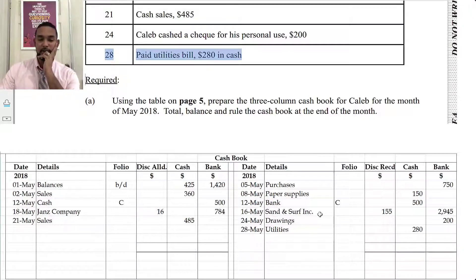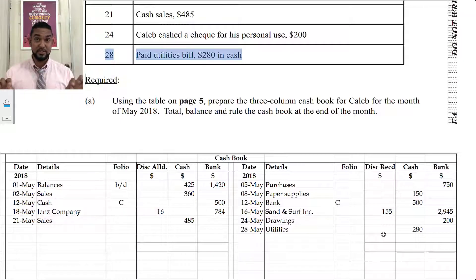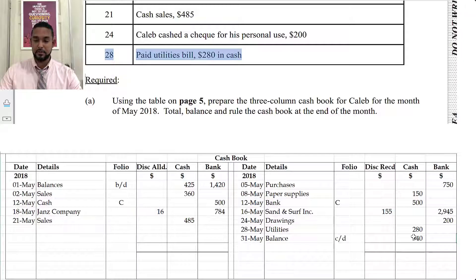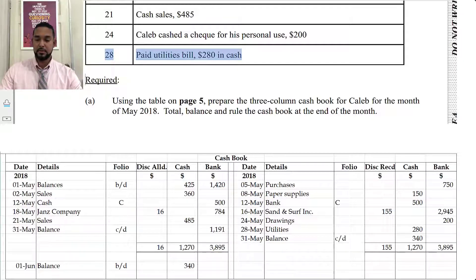Those are all the transactions. The discount allowed and discount received columns are simply totalled — they are not balanced off against each other. The cash and bank columns must be balanced. The cash debit side has about $1,200 and the credit side about $900, giving a balance carried down of $340 on the credit side. For bank, the debit side is about $3,900 and the credit side about $2,700, giving a balance carried down of $1,191. Cash is brought down on the debit side, but bank is brought down on the credit side.